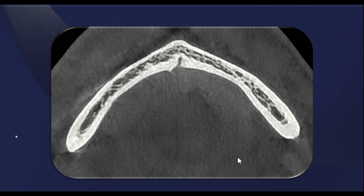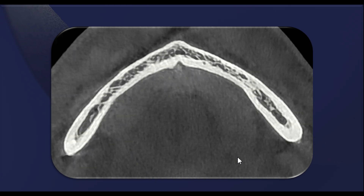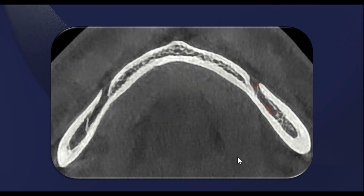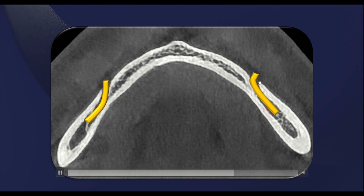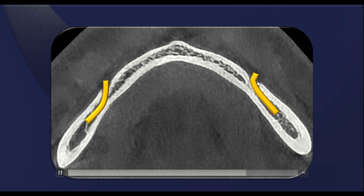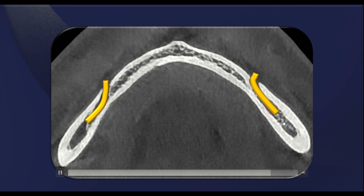In this CBCT axial section, you can see the mental foramen clearly. In this case, the mental nerve follows a straight pattern, exiting the mandibular canal in a direct pathway without any significant curvature.